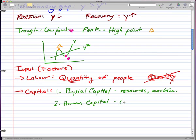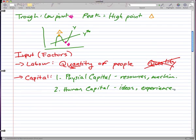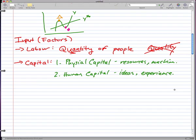Human capital is the ideas that people have that are not tangible, the experience that we gain through life. So when I'm talking about capital, I don't mean capital like money, but these two kinds of capital: physical capital and human capital. Now that's inputs.